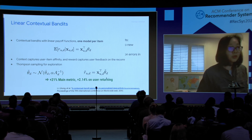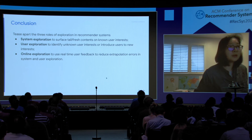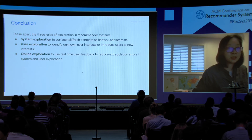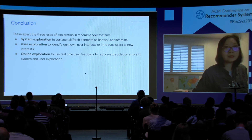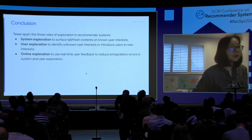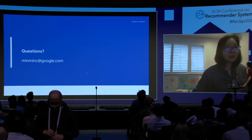In summary, this work tries to understand the different roles exploration can play in recommender systems and discusses the different challenges in measurement and optimization. We propose some solutions to start the work in these directions, and we hope these can serve as a foundation for more work on exploration. Thanks for everyone's attention, and I can take questions now.